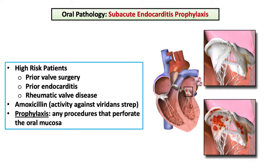The final topic is subacute bacterial endocarditis, which is frequently caused by strains of bacteria residing in the oral cavity, with viridans strep species topping the list. For those at high risk of SBE, defined by prior valve surgery, antibiotic prophylaxis with amoxicillin is recommended.